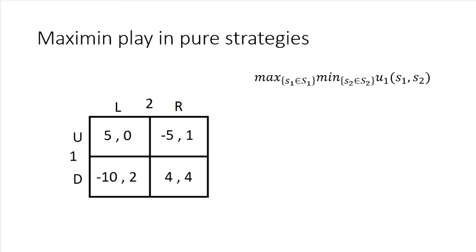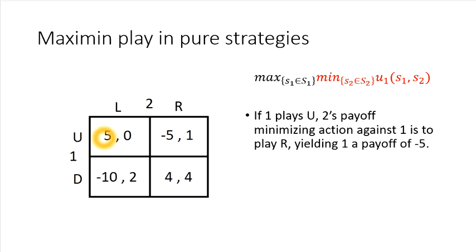What we want to do now is apply our definition of the Maximin strategy, and we're going to do this in two steps. First we solve the inside optimization problem. This involves finding player two's response that minimizes player one's payoff for all possible options of what player one could do. For example, if player one chooses Up, then player one is either getting a five or a negative five. If player two wants to choose her payoff-minimizing action, she would want to choose strategy R, because that would induce a payoff of negative five for player one, which is the minimum payoff compared to the other option of positive five.